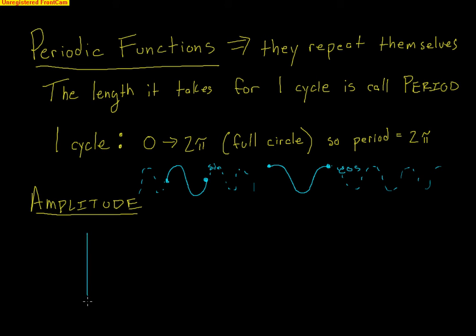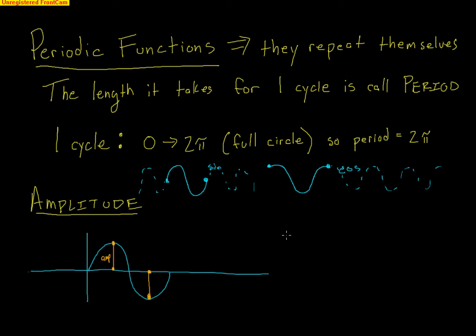The only other term you need to know is amplitude. The amplitude is the distance from the peak down to the x-axis — that distance is your amplitude. This is the same value as from the x-axis down to the bottom valley. For cosine, starting at 1, the amplitude is similarly from the highest peak to the x-axis, which is also from the x-axis down to the lowest peak.